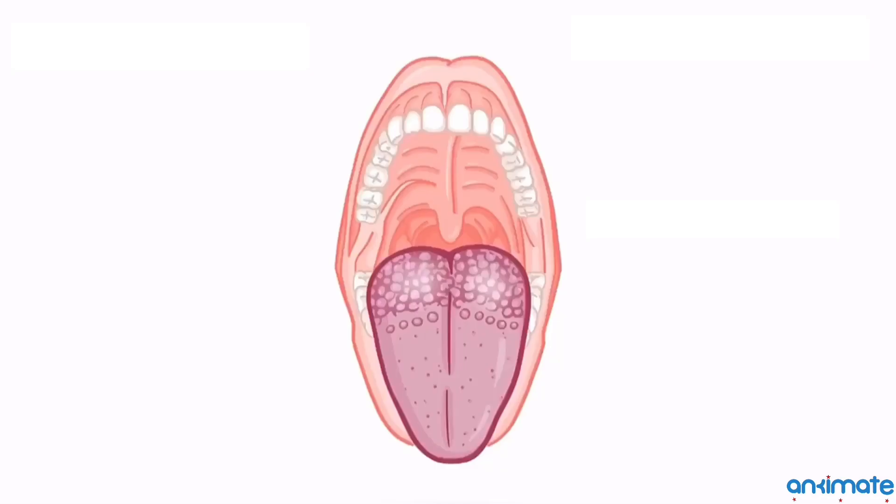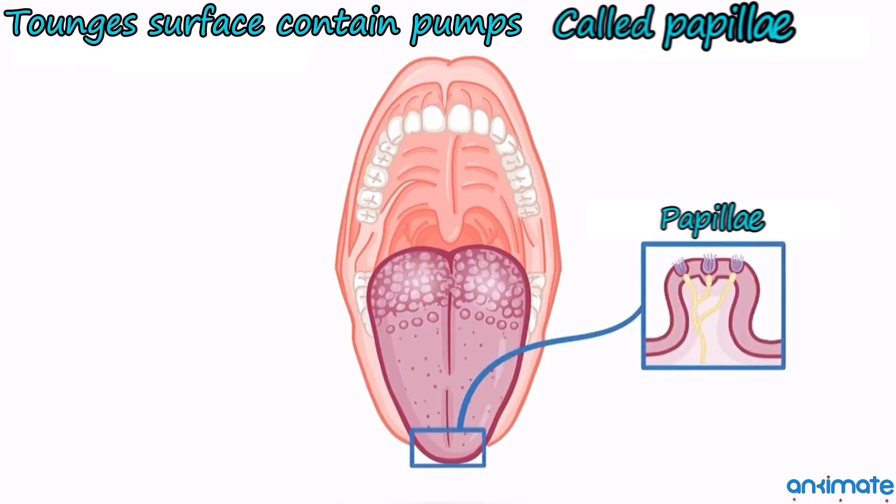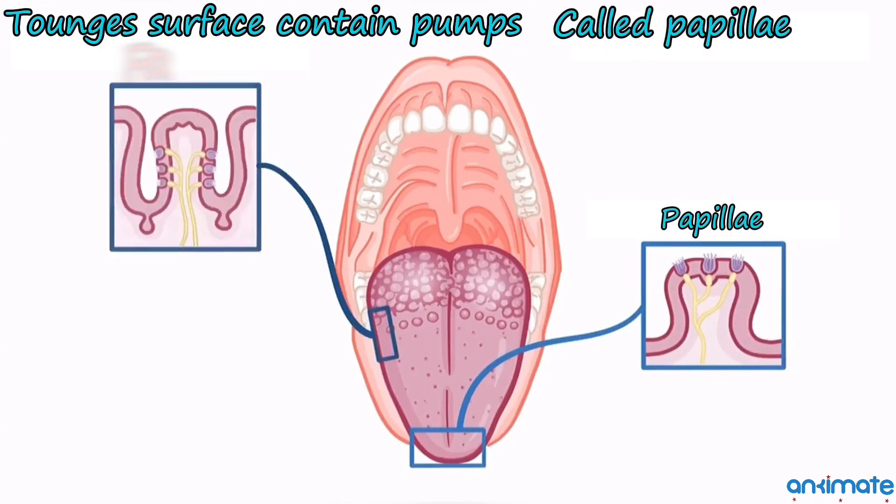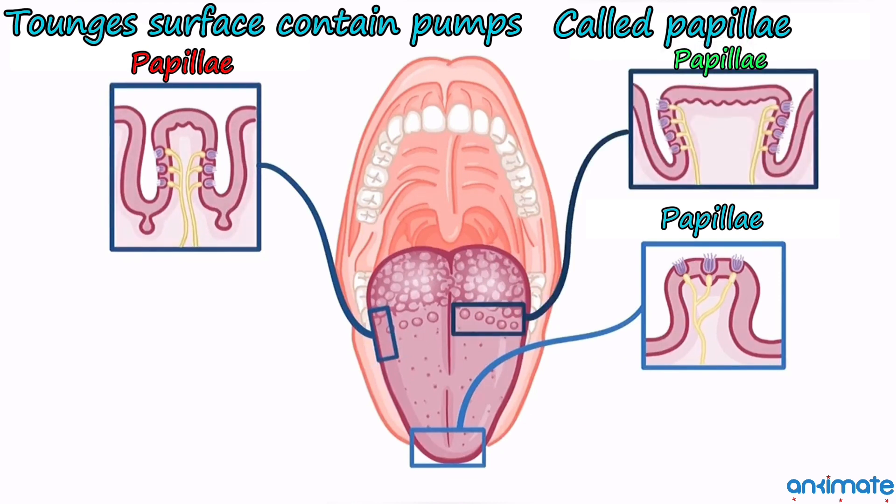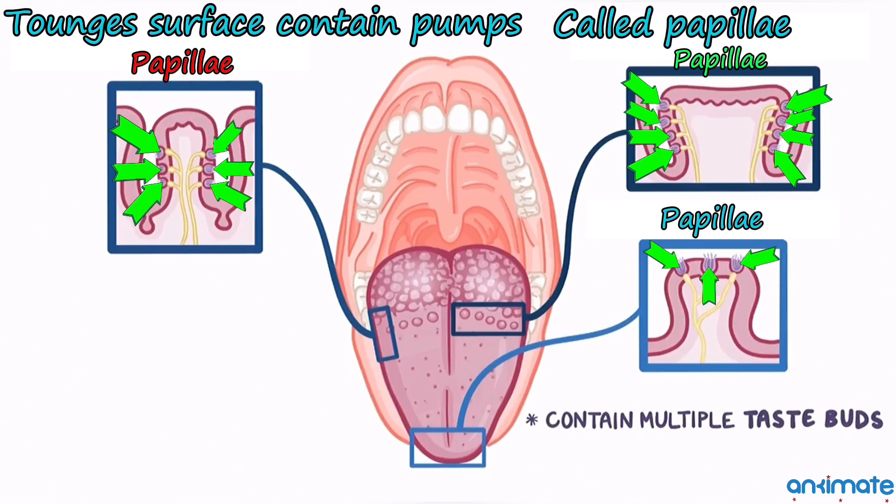Here comes the sense of taste. On our tongues, there are bumps of tissue called papillae. Between papillae are embedded taste buds.